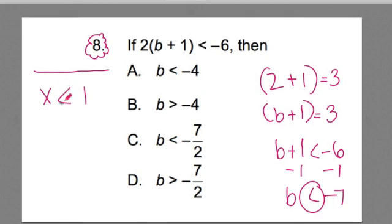The inequality, the larger side always faces the larger number. So this is the open side. I think of it like a Pac-Man. The Pac-Man's going for the bigger number. So we could think of this as 1 is greater than x, or you could think of it as x is less than 1, and the arrow here is facing the smaller number.